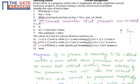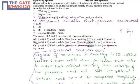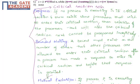From this question, what we learn is the critical section solutions — that is, the three conditions: progress, bounded waiting, and mutual exclusion. Thank you.